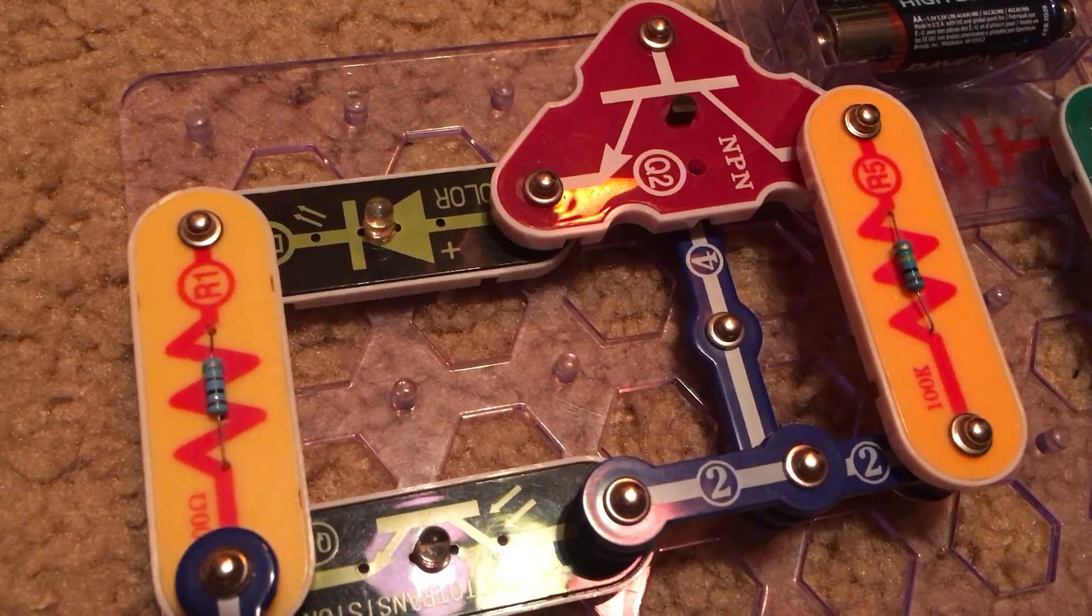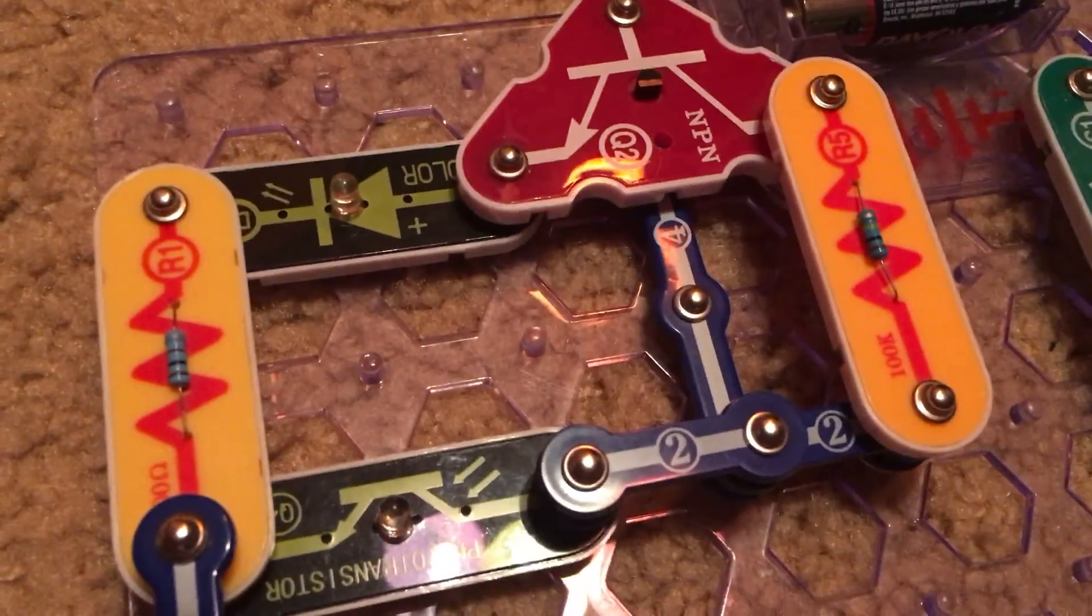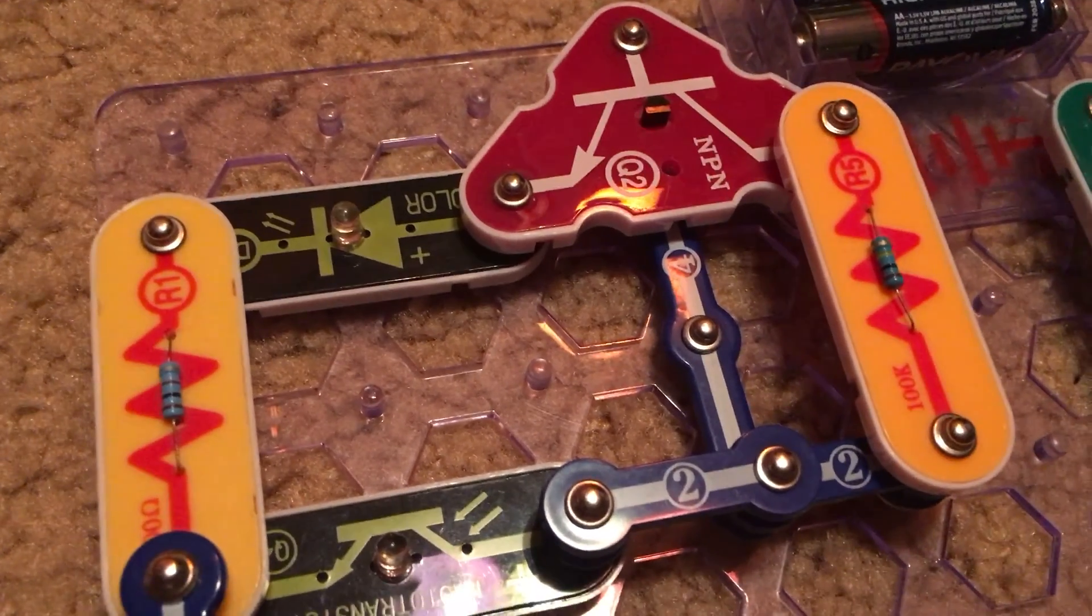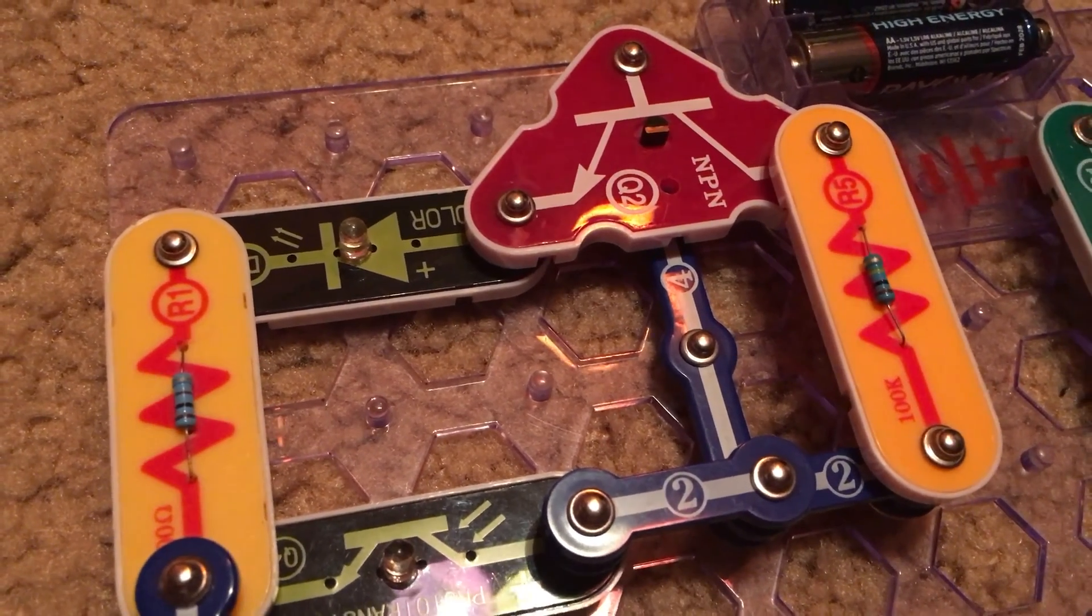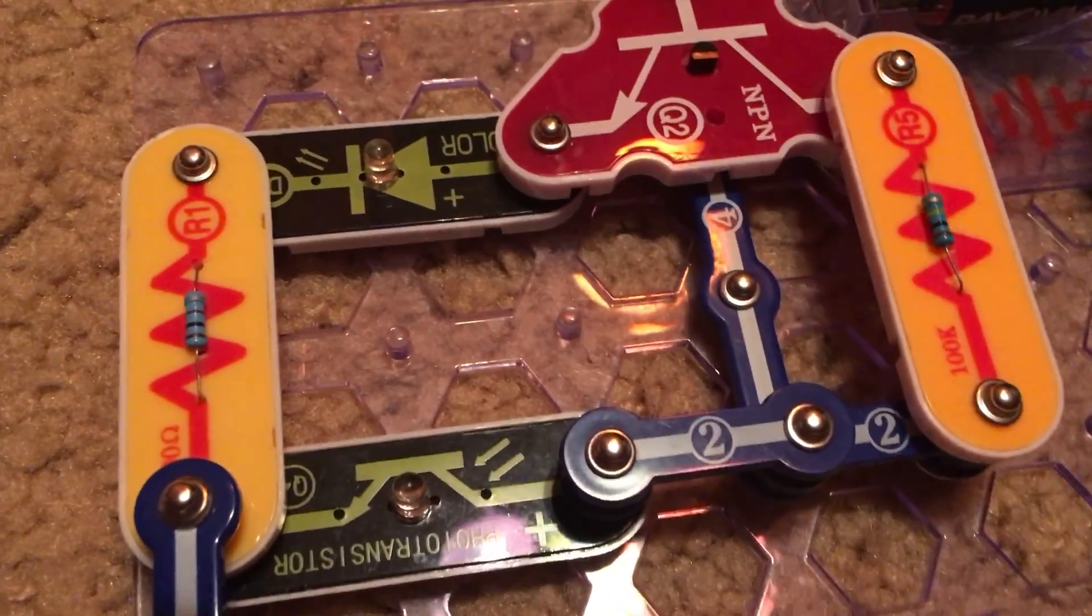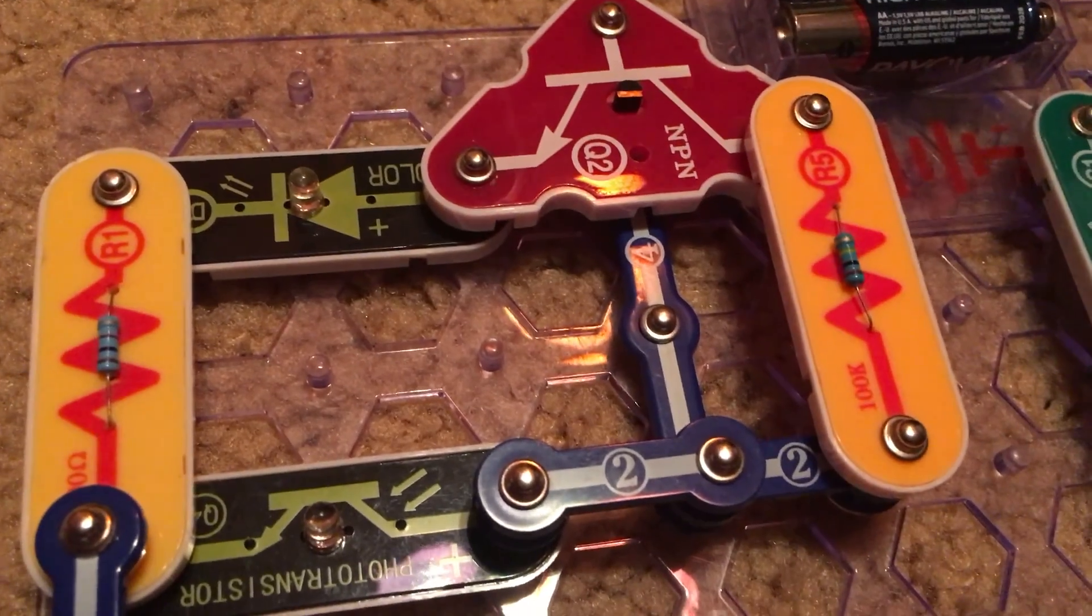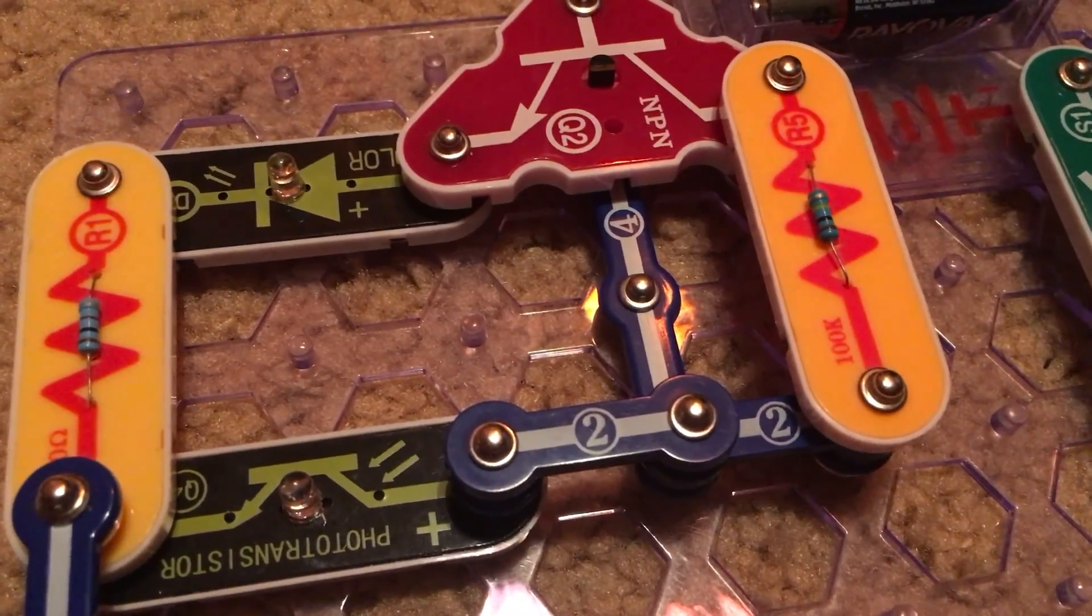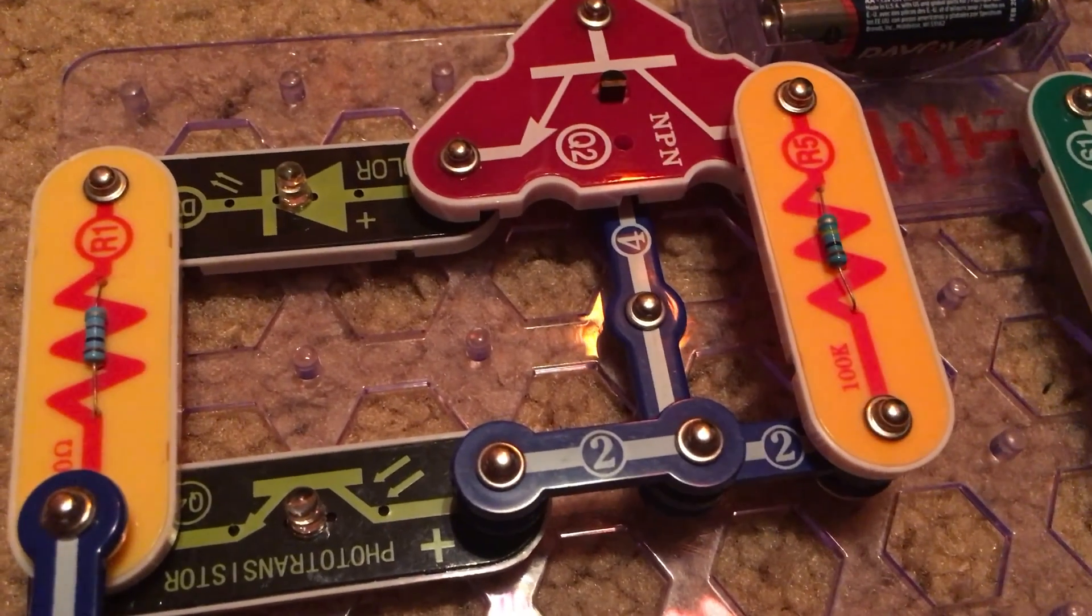Now it is off. That is because in this particular circuit as I cover the phototransistor resistance decreases allowing the color LED to turn on. But when I remove my hand and light enters the Q4 component resistance increases turning off the LED. Kind of like a street lamp that turns on at night and off at day. And I explained to you that principle in the project automatic light earlier on in this kit.